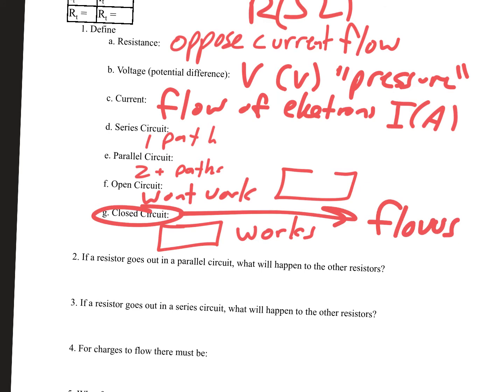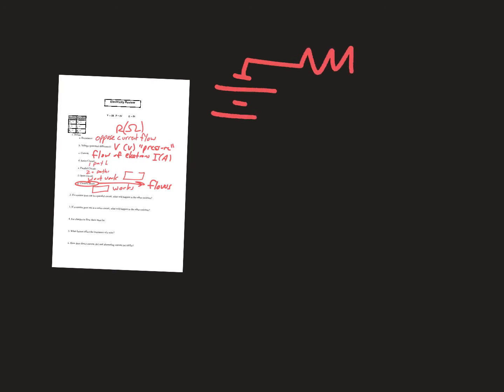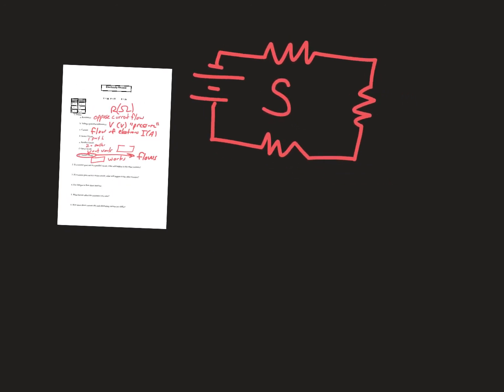Now, if a resistor goes out in a parallel circuit, what happens to the others? The same question applies to a series circuit. Let's draw a quick series circuit and a quick parallel circuit — a series circuit with three different resistors, and then a parallel circuit also with three different resistors.